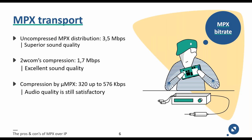This slide shows a brief overview of bandwidth usage when transporting MPX over IP. Uncompressed MPX offers linear transport at 3.5 megabits and is, from a technology perspective, the best method. Since bandwidth limitations are a hot topic, 2WCOM developed their own MPX compression technology, compressing MPX to 1.7 megabits while allowing the audio quality to remain virtually untouched.